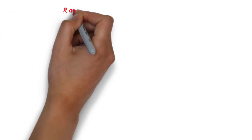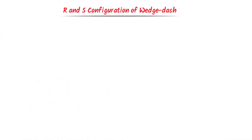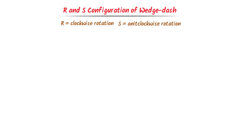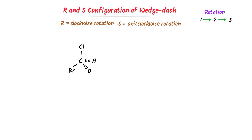Now we will learn R and S configuration of wedge-dash structures. Remember that R stands for clockwise rotation and S stands for anticlockwise rotation. Also remember that rotation is always from 1 to 2, then 2 to 3. We always neglect the fourth position. Now consider this organic compound. We know that this is a chiral carbon, so R and S configuration is possible. Now listen carefully.